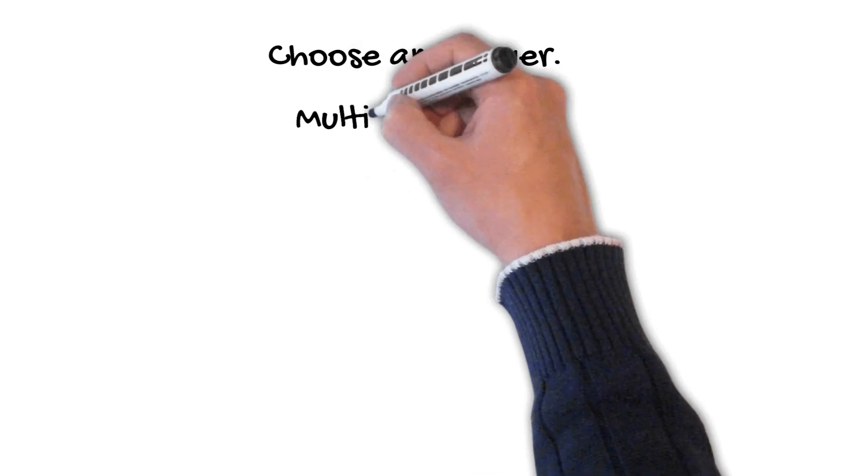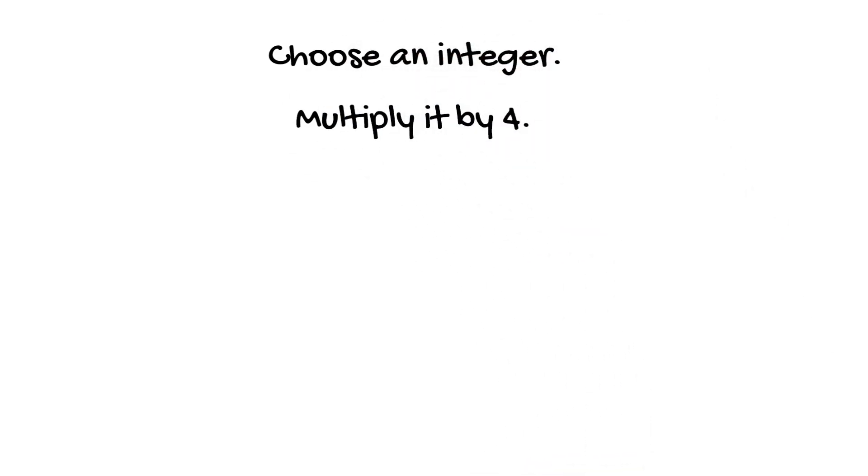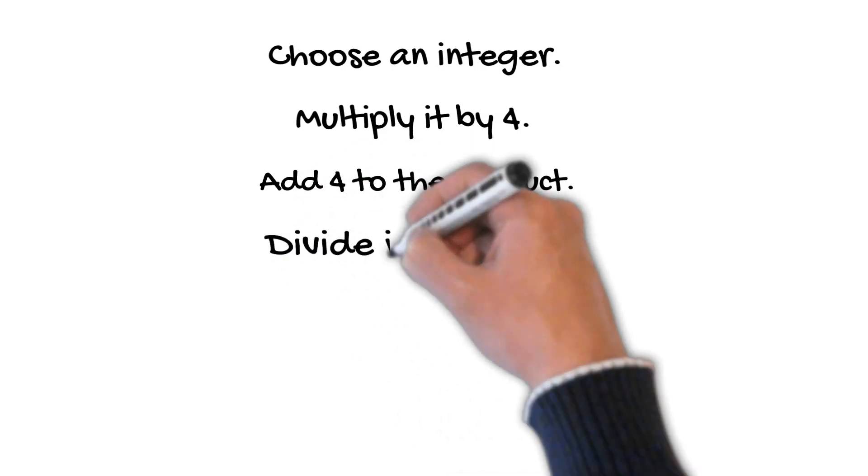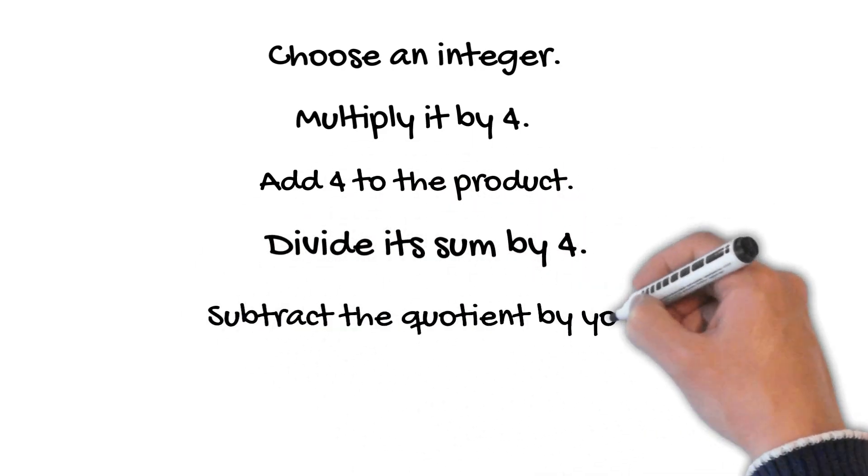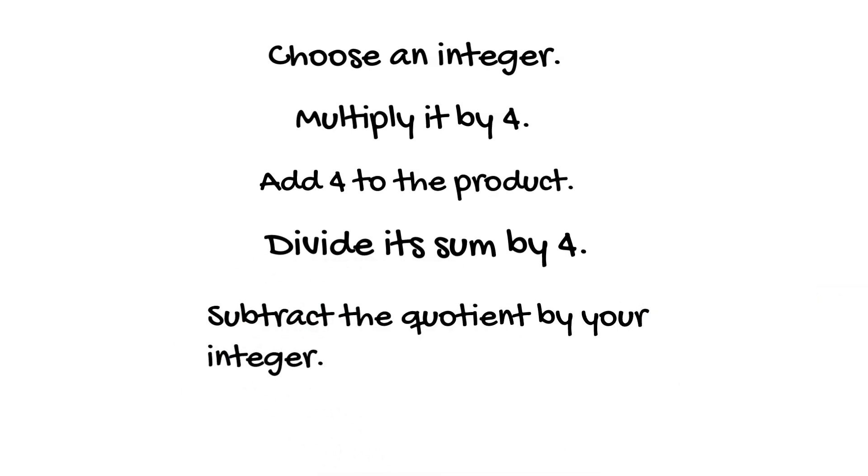Now multiply that integer by 4, then add 4 to the product you have. Next, divide the sum by 4. Finally, subtract the quotient by your chosen integer. Let me guess, your answer is 1. How do I know that?